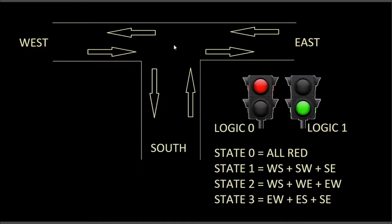This is a T-junction, assuming a system where you could drive, and arrows show the various directions in which people will drive. For this example we will just use a very simplistic system where we have just two lights — a red and a green. So logic 0 will be used to represent a red light and logic 1 will be used to represent a green light.